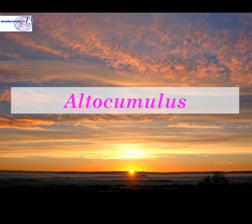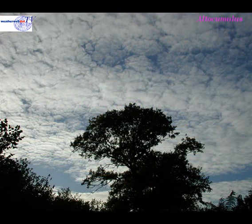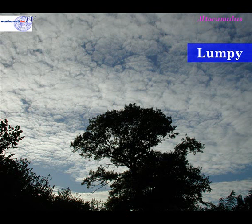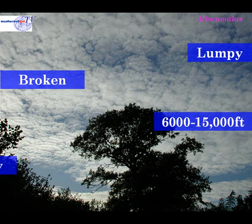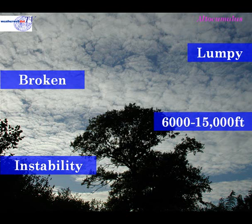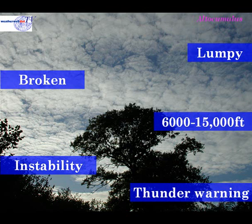Now we'll investigate alto cumulus cloud. This cloud again occurs at medium levels in the atmosphere. But alto cumulus, instead of being flat and featureless as in alto stratus, is quite lumpy in nature. Generally alto cumulus is a broken cloud, occurring between 6 and 15,000 feet. Because of its convective nature it's associated with instability in the medium levels, meaning there is the potential for showers to be forming.